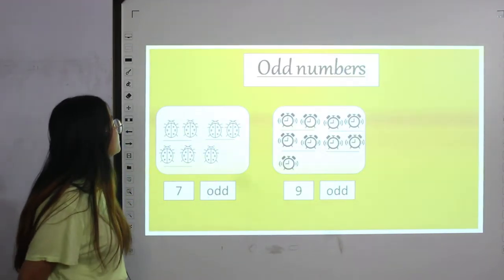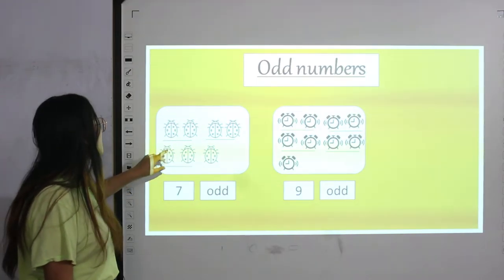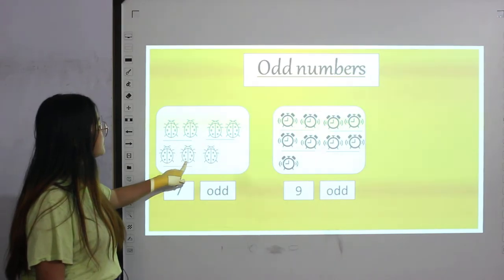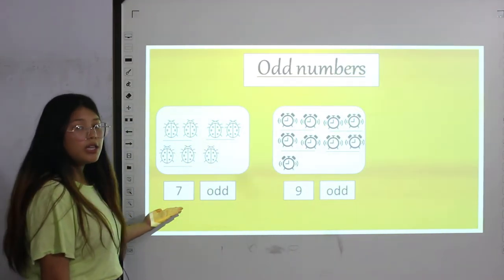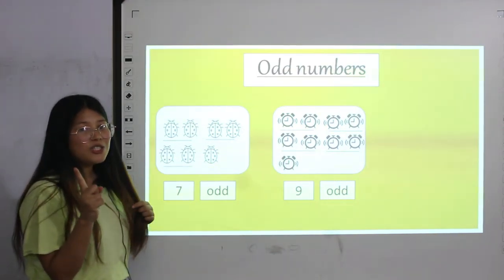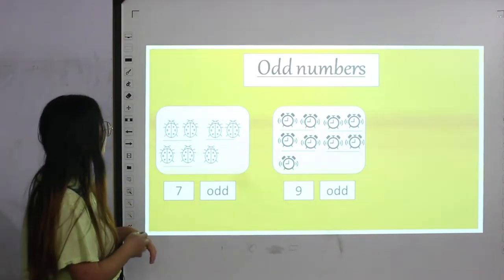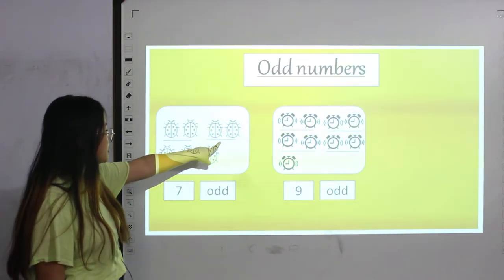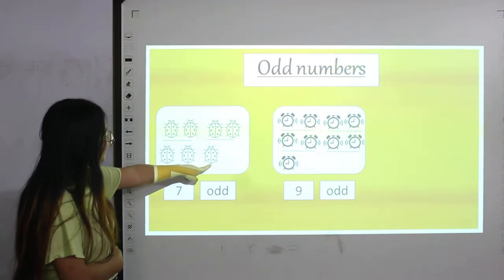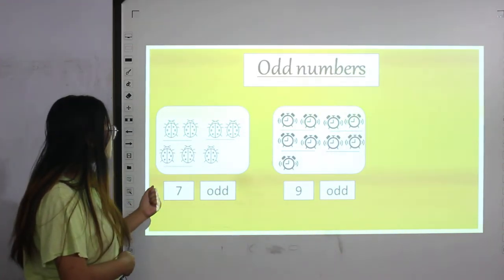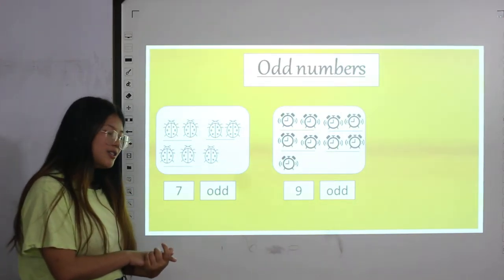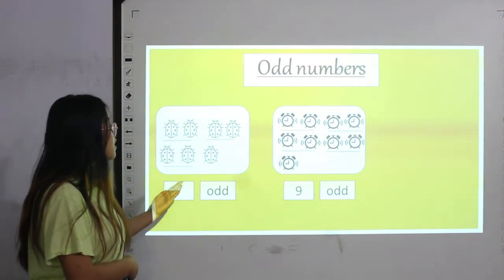Let's see how many ladybugs we have over here. One, two, three, four, five, six and seven. We have seven ladybugs. To distinguish if seven is odd or even, we have to pair them up. These two are in pair, these two are in pair, these two are in pair as well, but this ladybug is left all alone — it doesn't have any pair. So seven is an odd number.